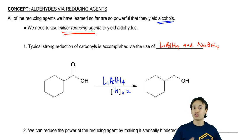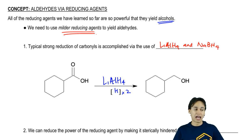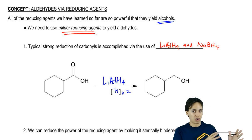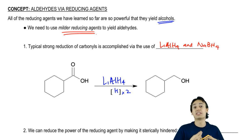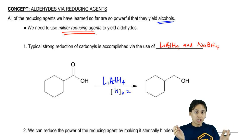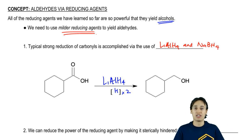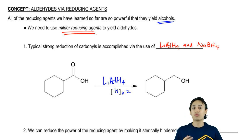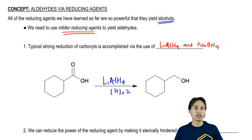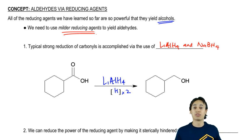What we're going to do now is learn two such reagents that qualify as milder reducing agents that actually make aldehydes, not alcohols. We're going to see that they have some things in common — specifically, they use steric hindrance to reduce the power of the reducing agent, and they both add only one equivalent of hydrogen at a time. These reagents do seem kind of random and have some weird names, but we'll try our best. Let's go ahead and start off with the first one.